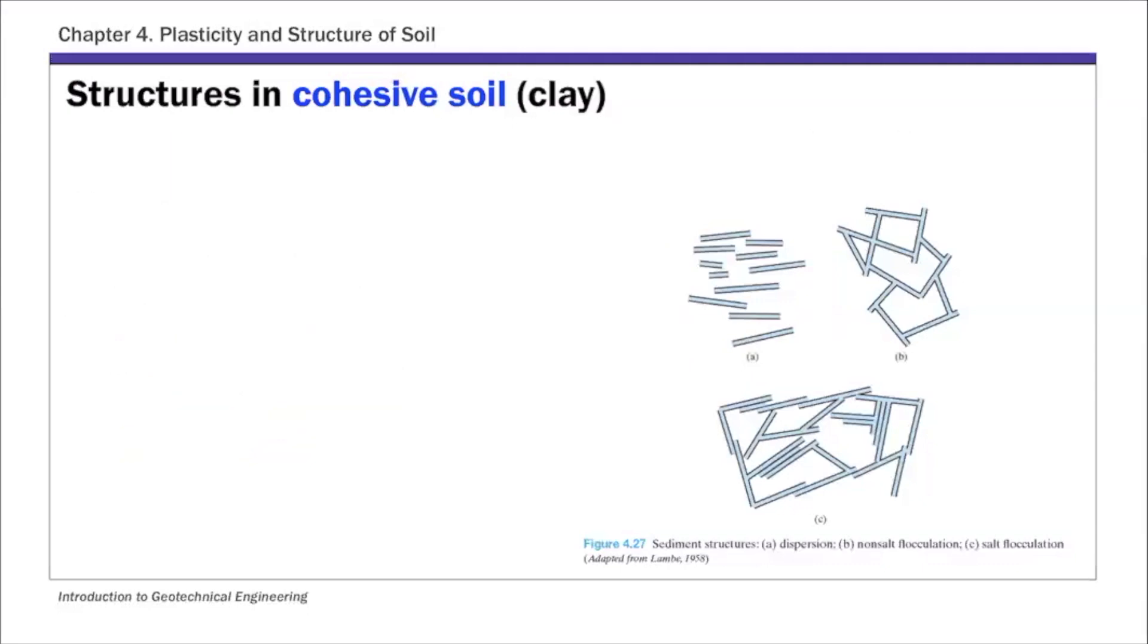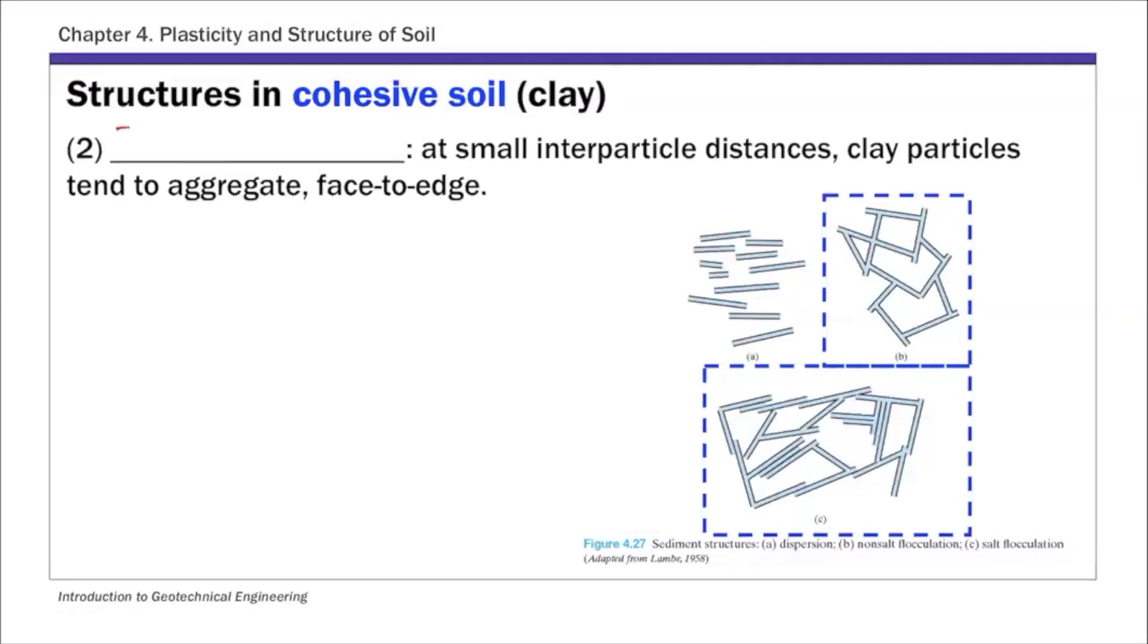The second type of structure in cohesive soil, this is called flocculated structure. So this structure happens when the clay minerals, during their random motion, they are attracted to each other. So you have the negatively charged faces attracted to positively charged edges, and they've aggregated to form flocs. So the structure is flocculated structures.